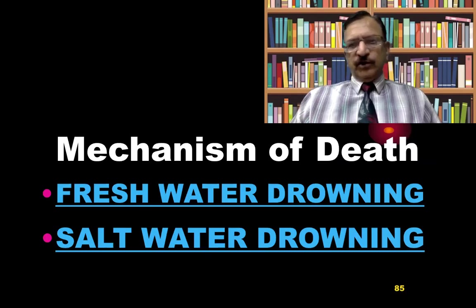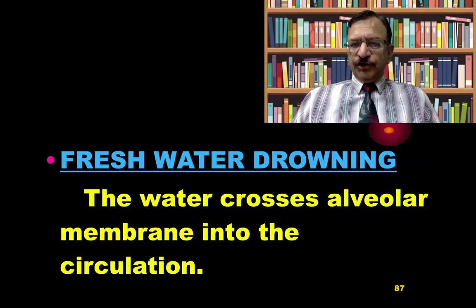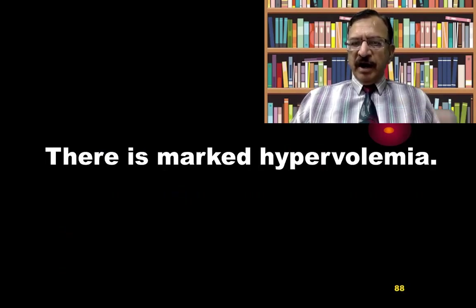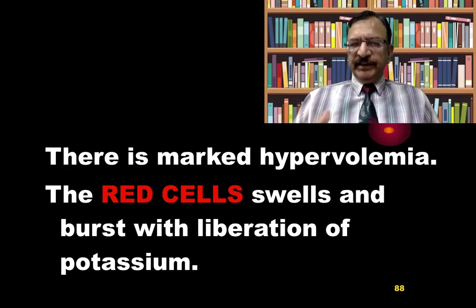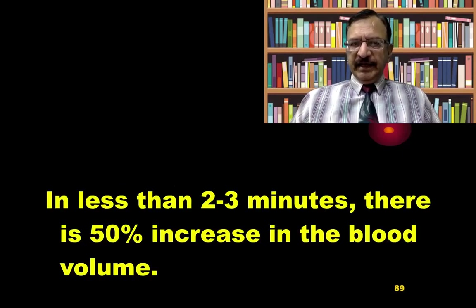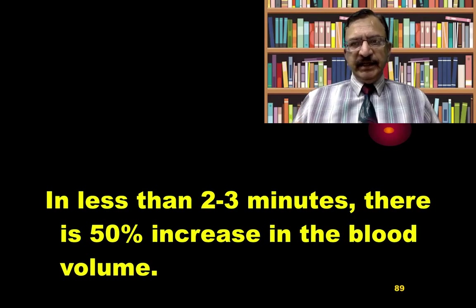In fresh water and salt water, the mechanism of death is a little different. In fresh water drowning, the water crosses the alveolar membrane and enters into the circulation. There is marked hypervolemia, and the red cells of the blood swell up and burst, with liberation of potassium. Within two to three minutes there is a 50% increase in blood volume.